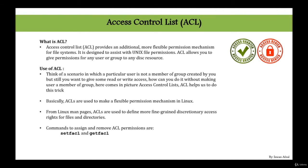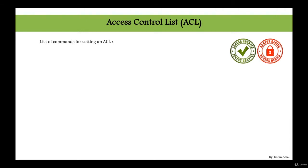Here are the commands for setting up ACLs. To add permission for a user, run setfacl with the -m option to modify, then u for user, followed by a colon, the username — in this case, iabsol — then a colon, the permission you want to grant, and finally the filename. Make sure you specify the complete absolute path of the file.